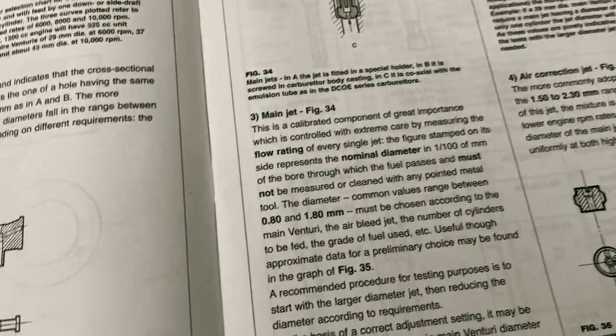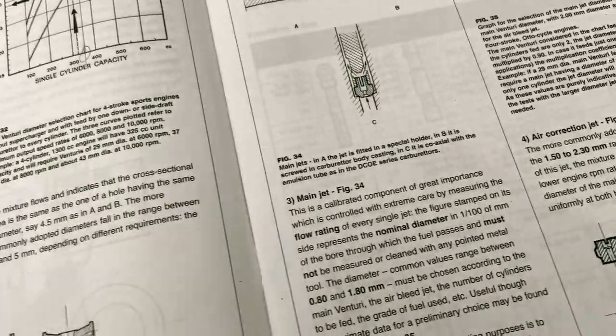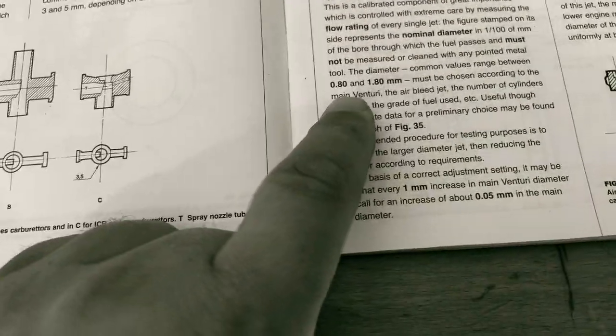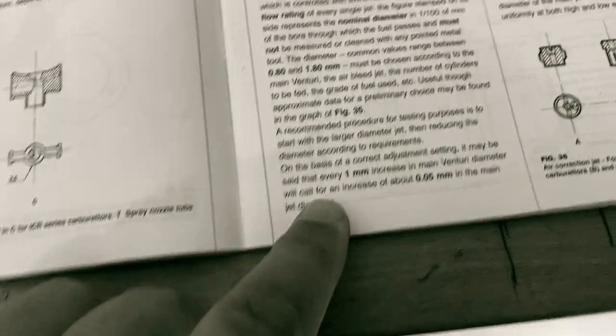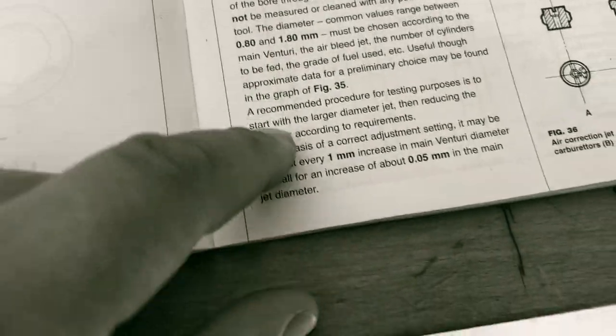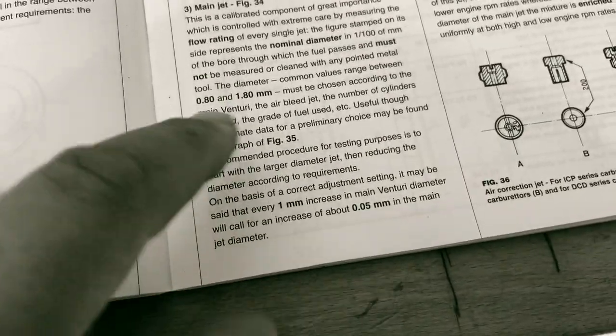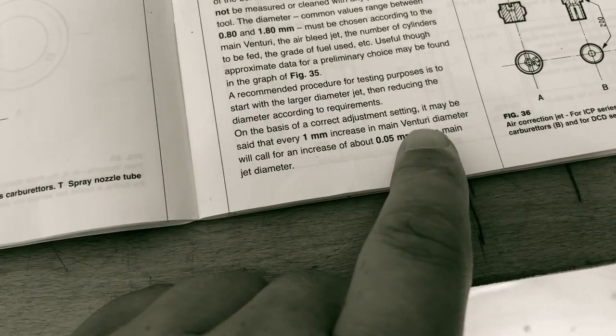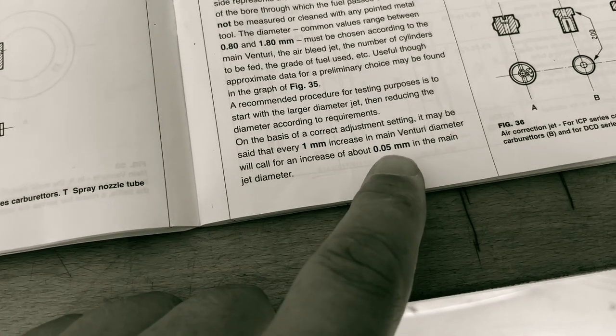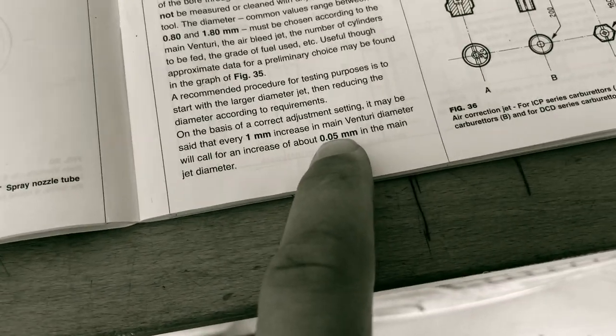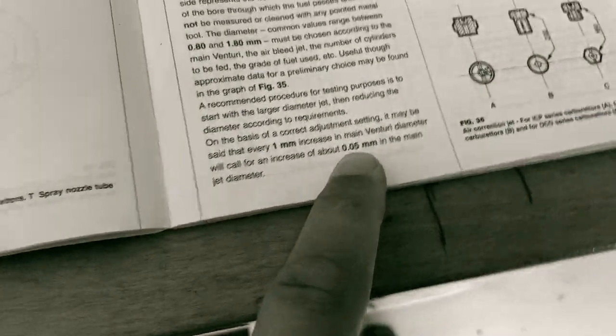Then under the suggestion of Mr. Weber, the sequence is that we look at the main jet - the fuel jet sitting at the lower end of the emulsion tube. The common range is 0.8 to 1.8mm. It says a lot about careful choice depending on all kinds of other parameters. It also says that if you increase the venturi diameter by 1mm, you should also increase the main jet diameter by 0.05mm. But there's also a graph.